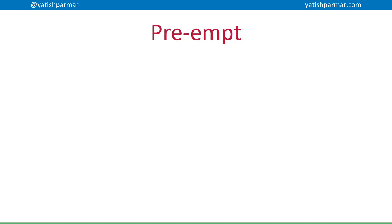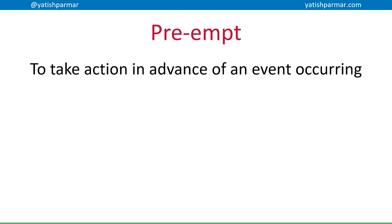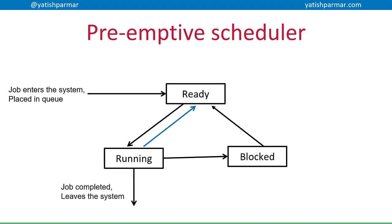An important concept when talking about schedulers is the word 'preempt.' If you can preempt something, you can predict something is going to happen in the future and take action in advance of that event occurring. A preemptive scheduler has the ability — as shown by the flashing arrow — to take jobs out of the running state and move them back into the ready state. This can happen because the scheduling algorithm has decided another job has higher priority, or it could be because it is a shorter job with a short amount of time remaining.